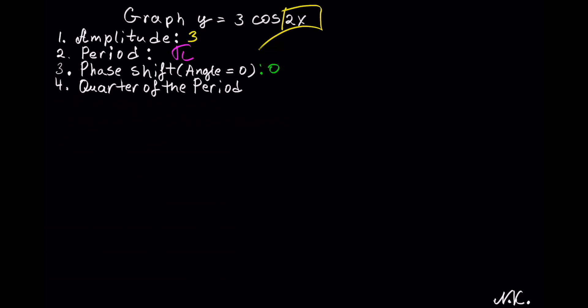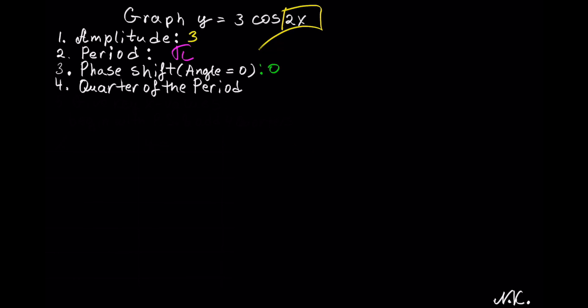The next thing we need to do is calculate a quarter of the period. To do so, we take the period and divide it by 4. The period is π, so a quarter of the period is π divided by 4.